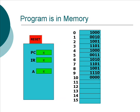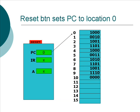We have this big red reset button. The purpose of the reset button — it only has one purpose — and that is to set the PC to zero, which means that once the PC is zero, the computer will automatically start executing the instructions starting at location zero. The X values in the IR register and the A register denote that we don't know or care what the contents are at this point.